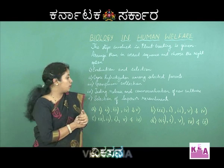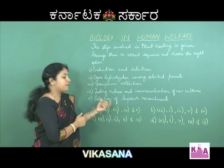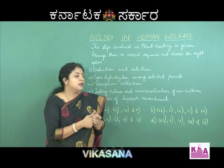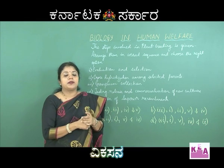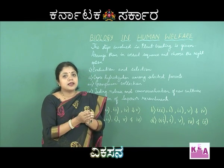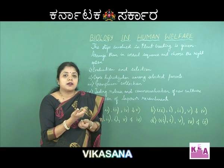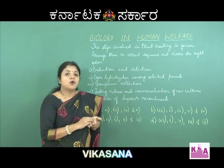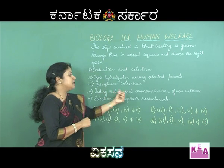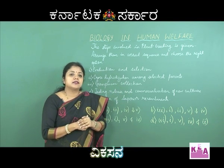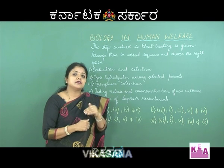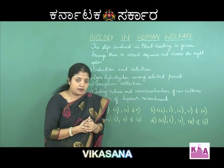Once the parents are selected with the desirable characters, they are allowed to cross hybridize. The offspring obtained will then have to be selected — specifically the superior recombinant, which is a recombinant in which all the desirable characters needed are present. Once this selection is done, it will be tested, released, and commercialized as a new cultivar.